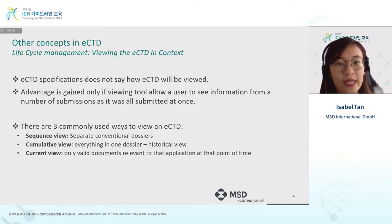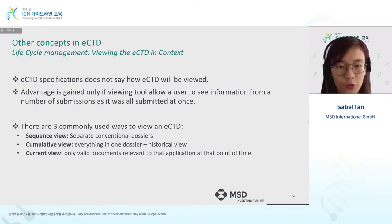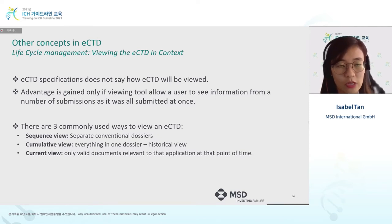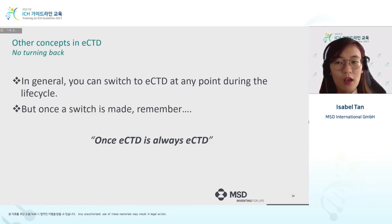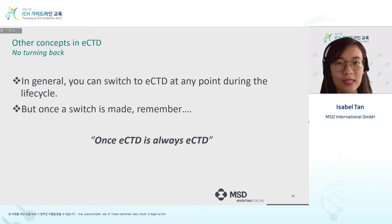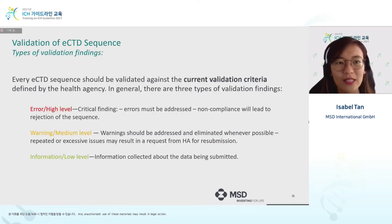There are three commonly used ways to view an eCTD: sequence view — only documents submitted in that sequence; cumulative view — every document submitted across the product's entire lifecycle; and current view — only the most latest drug information. An important point to reiterate: once eCTD, always eCTD. Once you have submitted an application in eCTD format, there is no turning back. Agencies and companies must always consider the technical specifications before officially launching it, and this applies to version 4.0 as well.